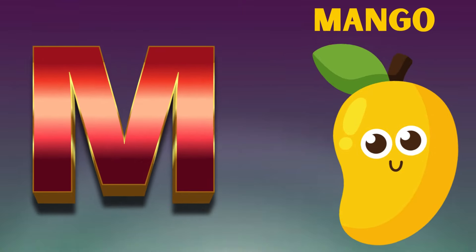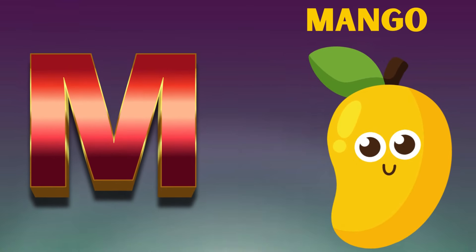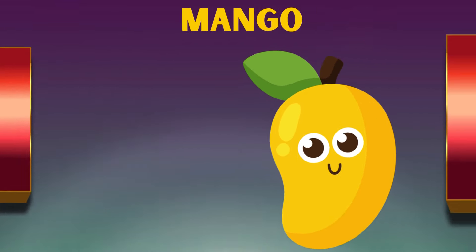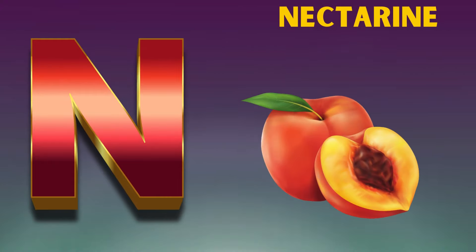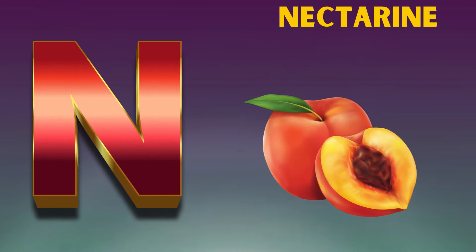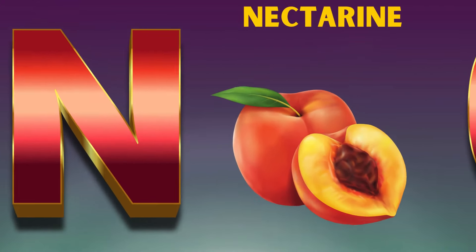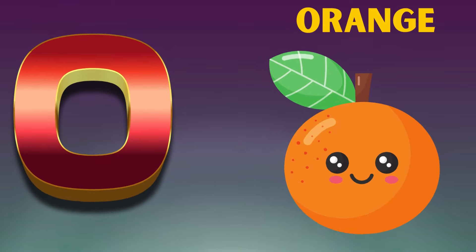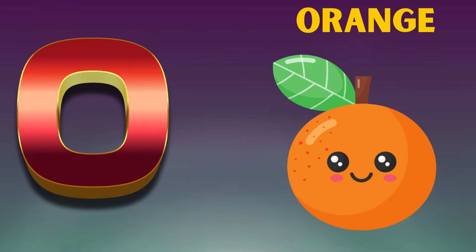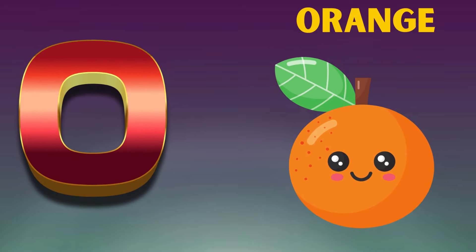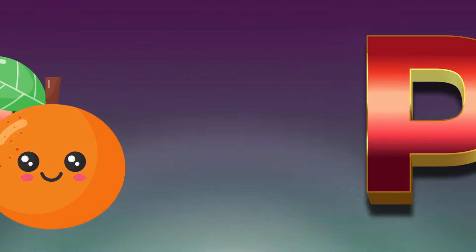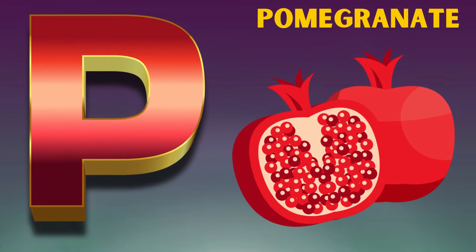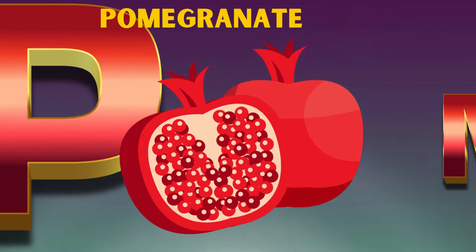M is for mango, m-m-mango. N is for nectarine, n-n-n-nectarine. O is for orange, o-o-orange. P is for pomegranate, p-p-pomegranate.